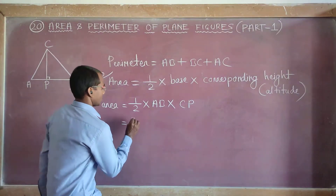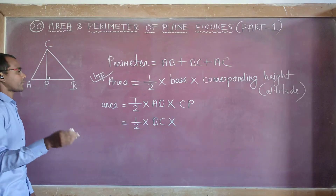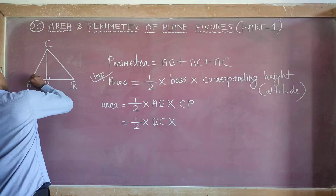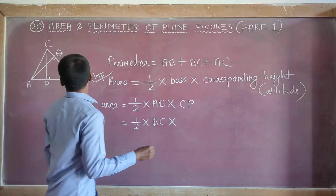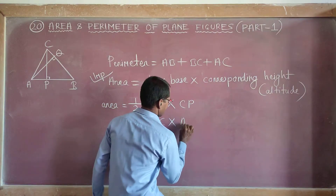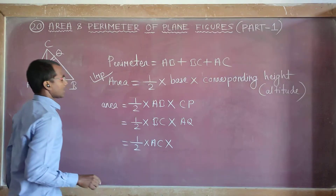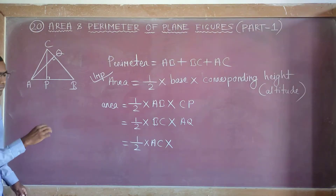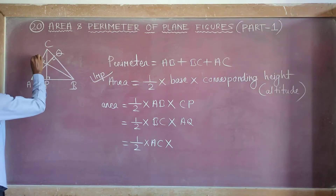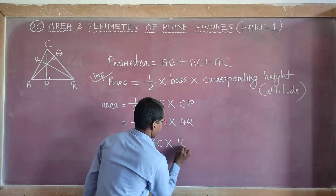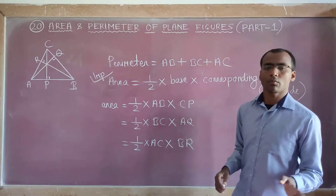We can also take another base. If BC is the base, its corresponding height is AQ — the perpendicular from A onto BC. Or if we take AC as the base, then we take the perpendicular from B. So remember: area of a triangle equals half into base into height. This is the best formula for any triangle.